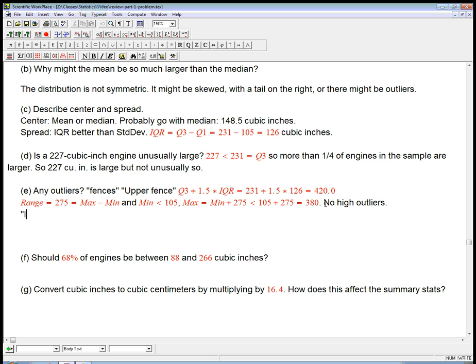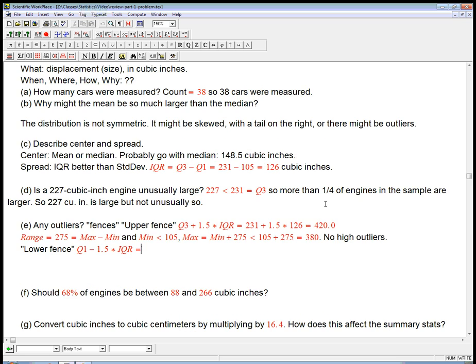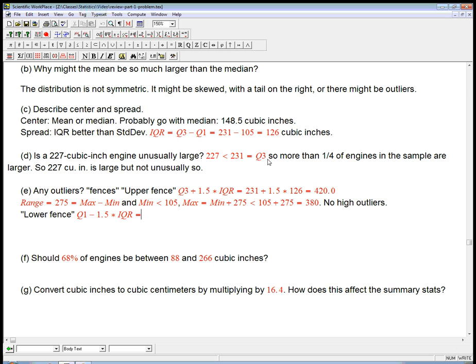What about the lower fence? It's very symmetrical. We start at Q1, and we subtract 1.5 times the IQR. And Q1 was 105, and you can probably see where this is going. What kind of number is that going to be? It's going to be negative. So, that's negative, so definitely no low outliers. This is not the kind of quantity, the displacement or the size in cubic inches of an engine. It's not something that could ever be negative.